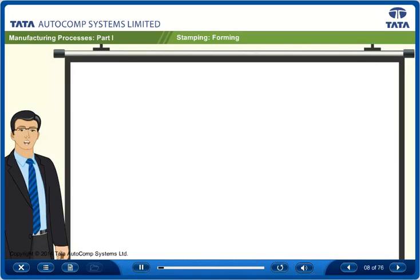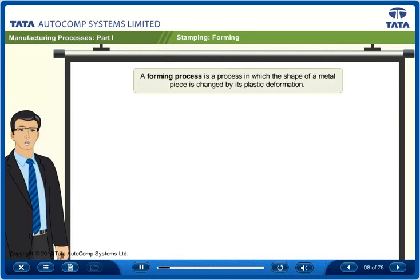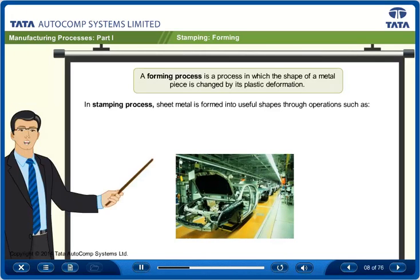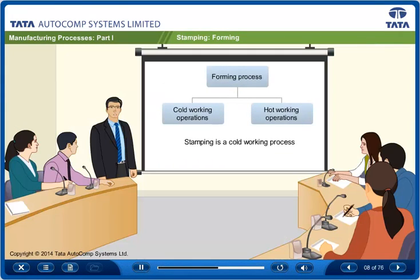A forming process is a process in which the shape of a metal piece is changed by its plastic deformation. In the stamping process, sheet metal is formed into useful shapes through operations such as shearing, stretching, bending, or compressing. Metal forming processes are classified into cold working and hot working operations.